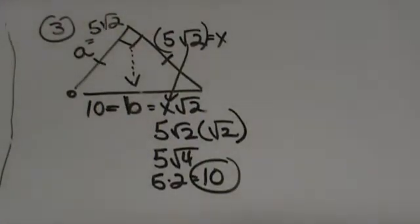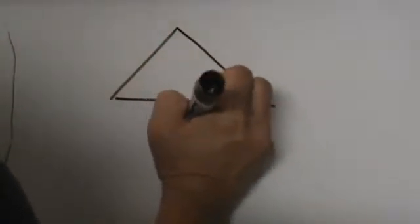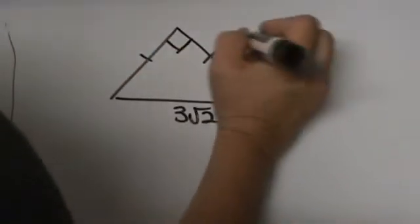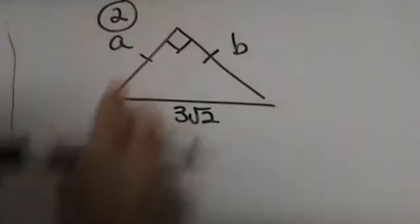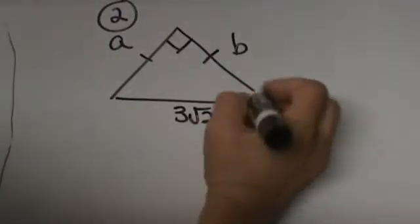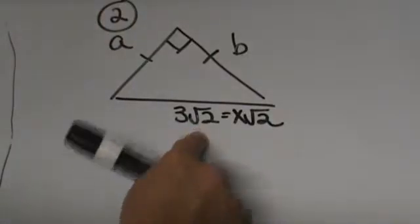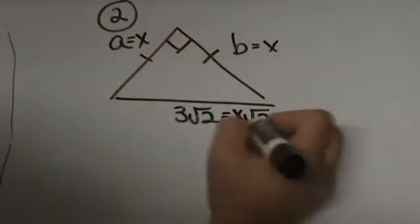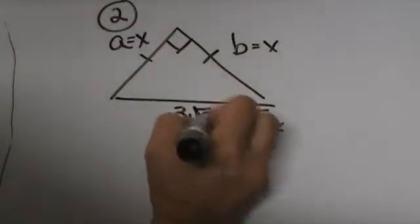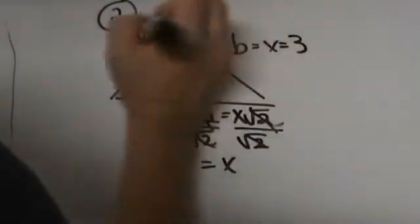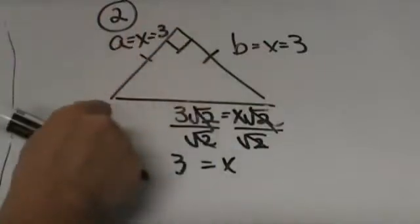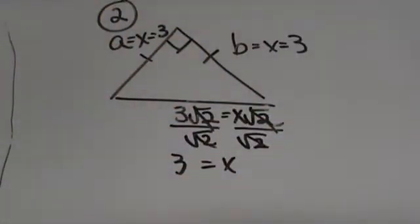Now let's look at number 2 where we are given the hypotenuse. We have 3√2 as the hypotenuse and we are looking for A and B. We label the hypotenuse x√2 because that is the formula, then solve for x — each leg equals x. Divide both sides by √2 and x = 3. So each leg is 3. That makes sense: if both legs are 3 you multiply by √2 to get the hypotenuse 3√2.